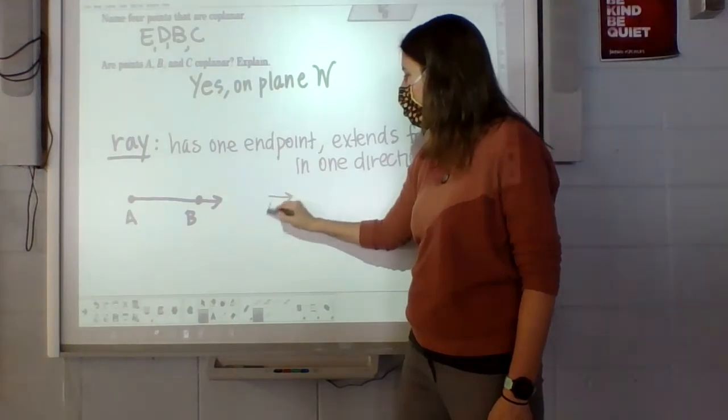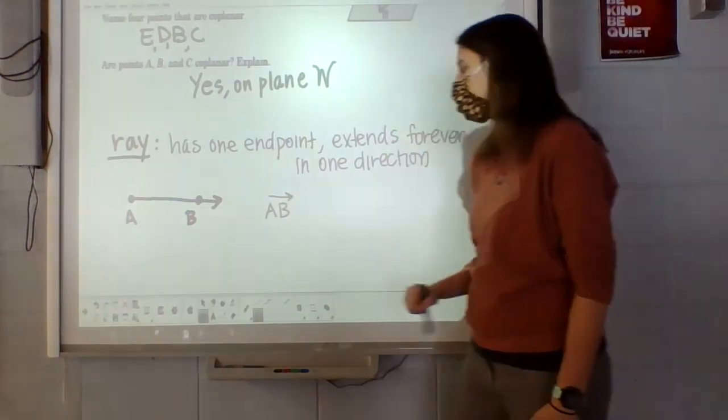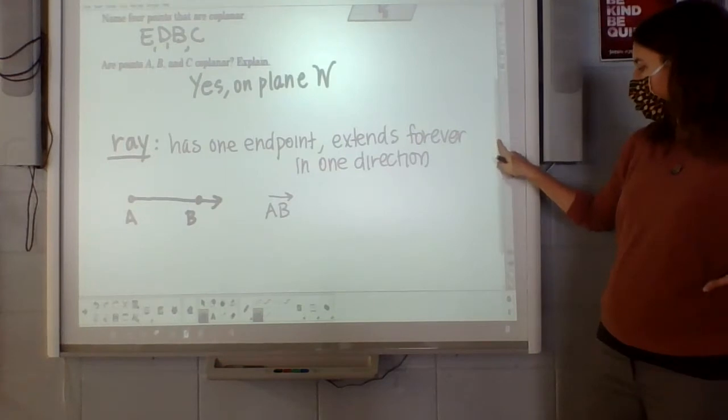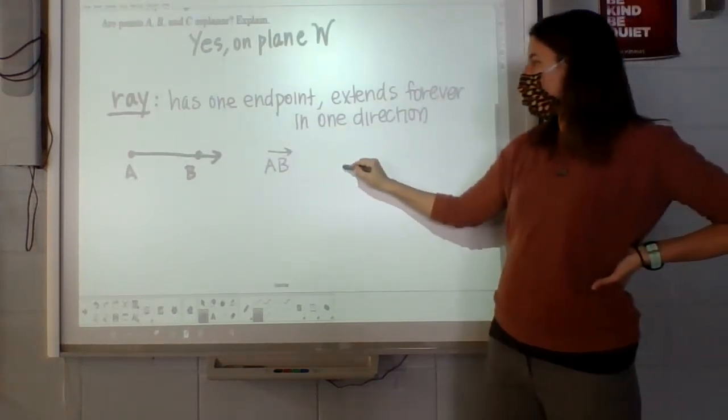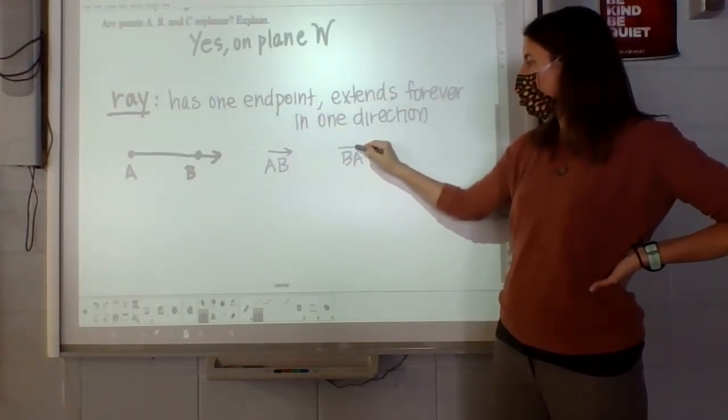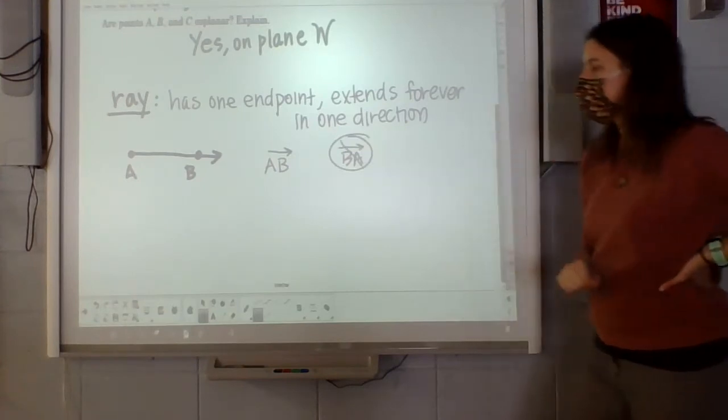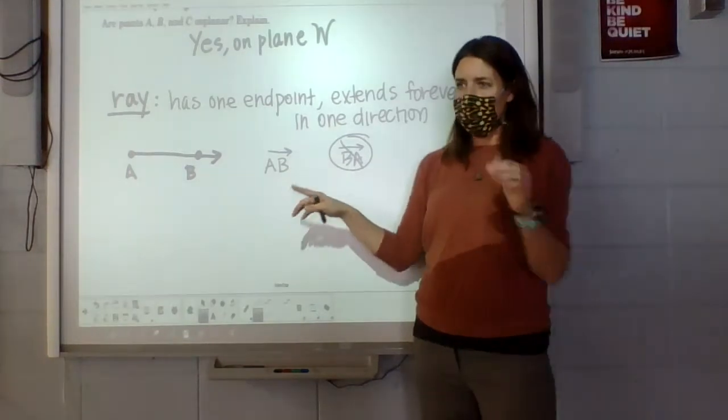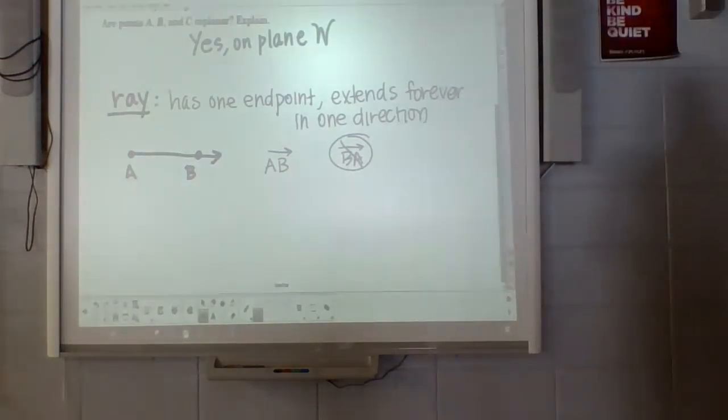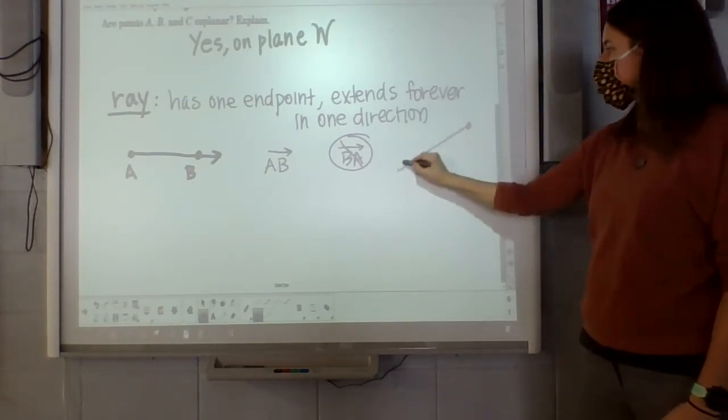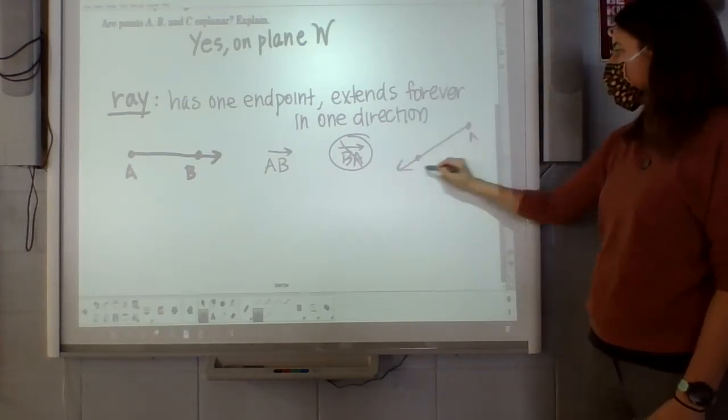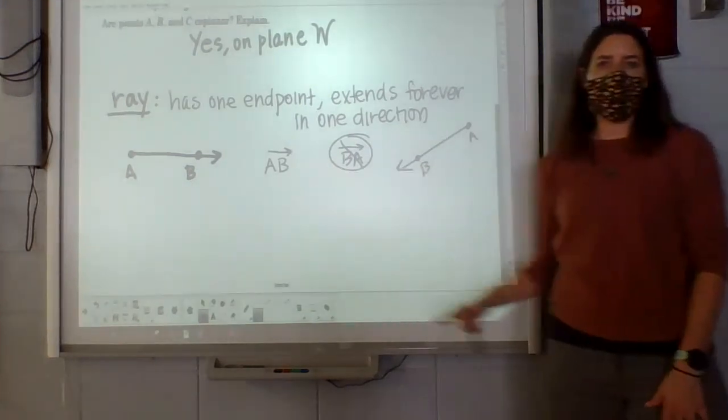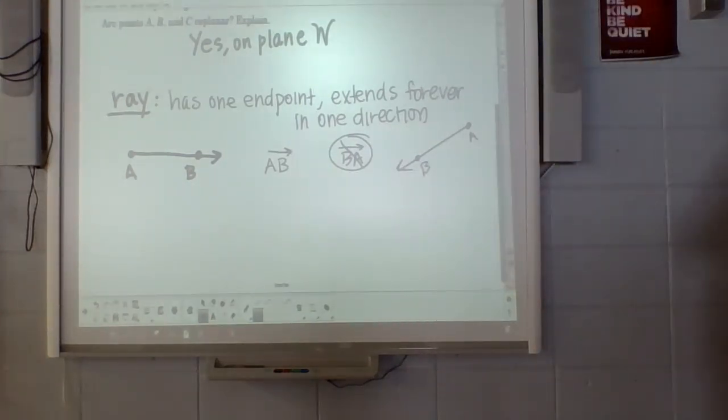So the way we would name this is AB, but it has to be named specifically that way. If you called it BA with a little arrow over the top, that would be wrong. Because we have to show in the name that it goes from A to B. The little arrow in the name always goes to the right, regardless of the way the ray is facing. So it could look like this, and we would still call this ray AB.